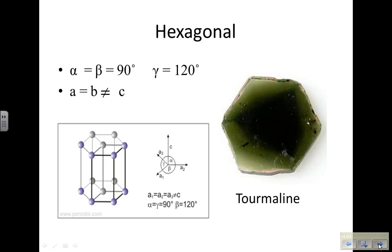In a hexagonal crystal, tourmaline exhibits a hexagonal shape. Your alpha is between A and C this time. Beta is between A1 and A2 in this one, and your gamma is 120 degrees. Your A and B are equal to each other, but C is a different length.